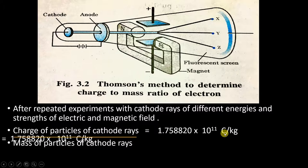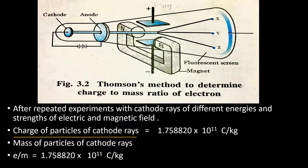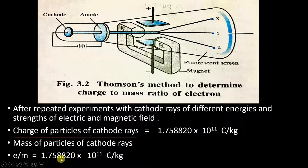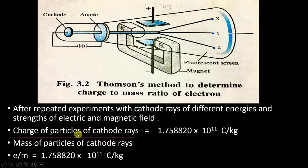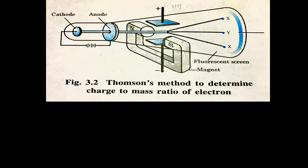To simplify, this formula is written as e/m, where e represents the charge of particles of cathode rays and m represents the mass of particles of cathode rays, equal to 1.758820 × 10¹¹ C/kg. The key word to emphasize here is 'particles of cathode rays' — this is the charge to mass ratio of the particles of cathode rays.